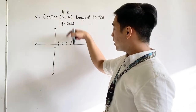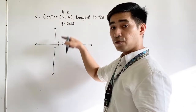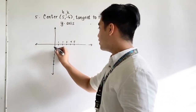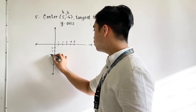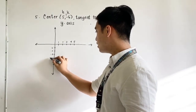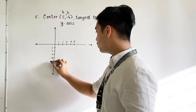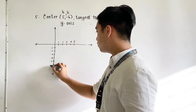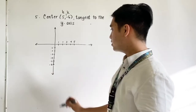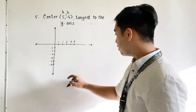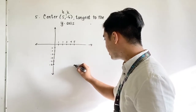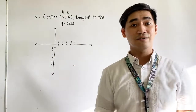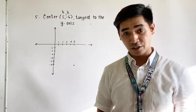Counting to negative 6 for the y-coordinates: negative 1, negative 2, negative 3, negative 4, negative 5, and negative 6. So at coordinates 5, negative 6 — therefore, this is now the center.